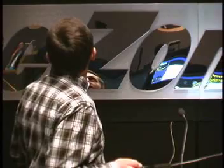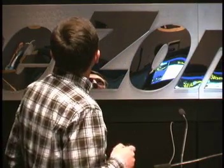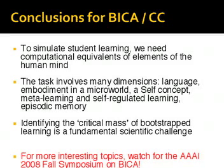The second example was learning by reading, which appears to require a lot of dimensions like embodiment and guidance by human structure. The conclusion for this part would be that we need to reproduce elements of the human mind in order to understand the process of student learning. The task involves multiple dimensions in the sense that it requires virtual embodiment and interactions with the human mind. The fundamental scientific problem is identifying this critical mass. These and many other topics will hopefully be discussed at the AAAI fall symposium which Ben and I are trying to organize. I would like to invite you all to come. Keep watching the AAAI website.